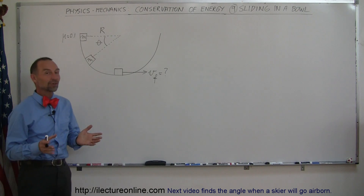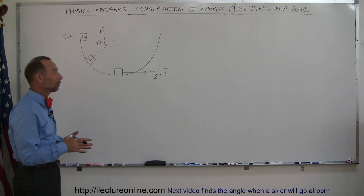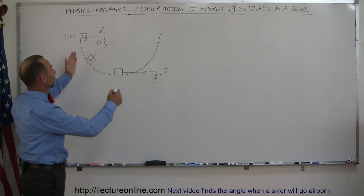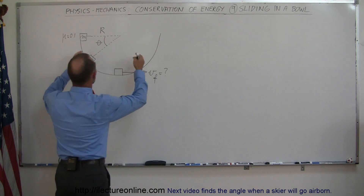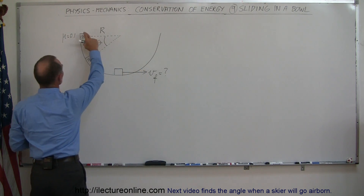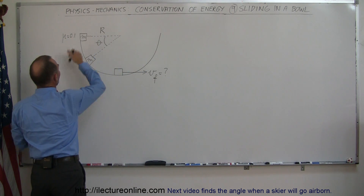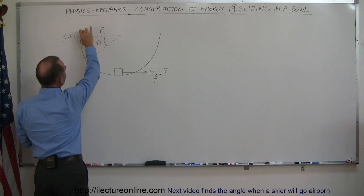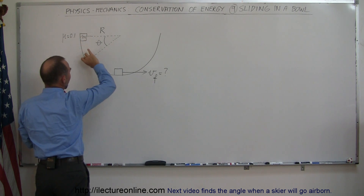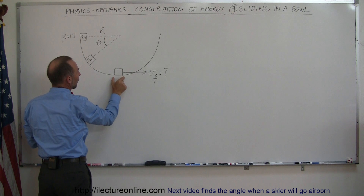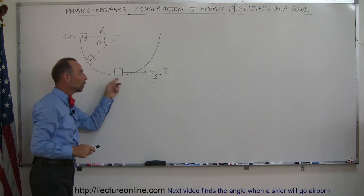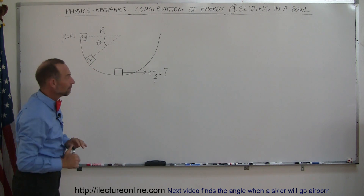Here is a more challenging problem for those who like to be challenged. We have a bowl with an object of mass m against each side at the very top, and we assume that to be vertical. The mass is going to slide down, and the question is: when the mass gets to the bottom of the bowl, what will be its final velocity?